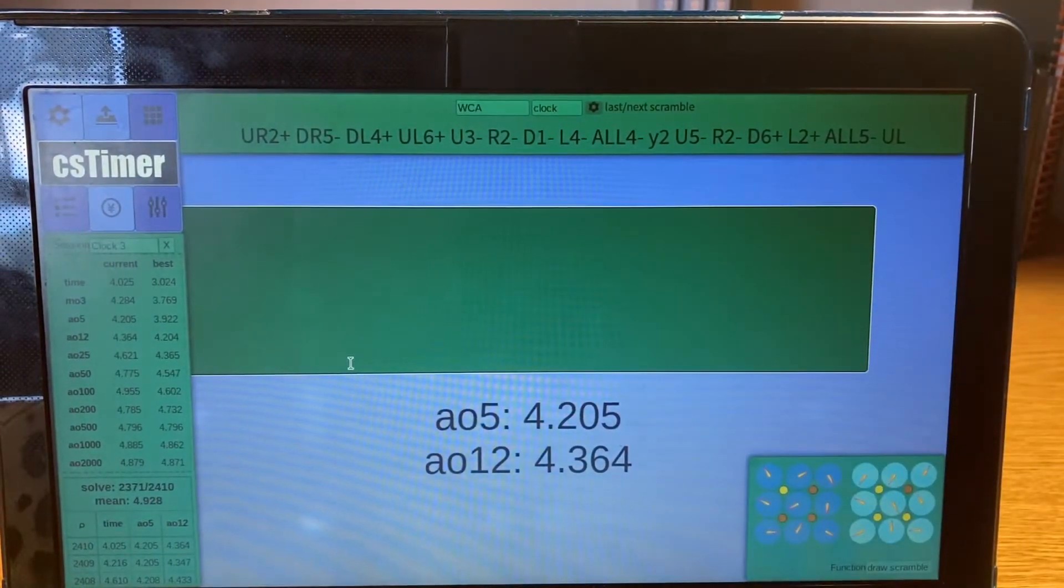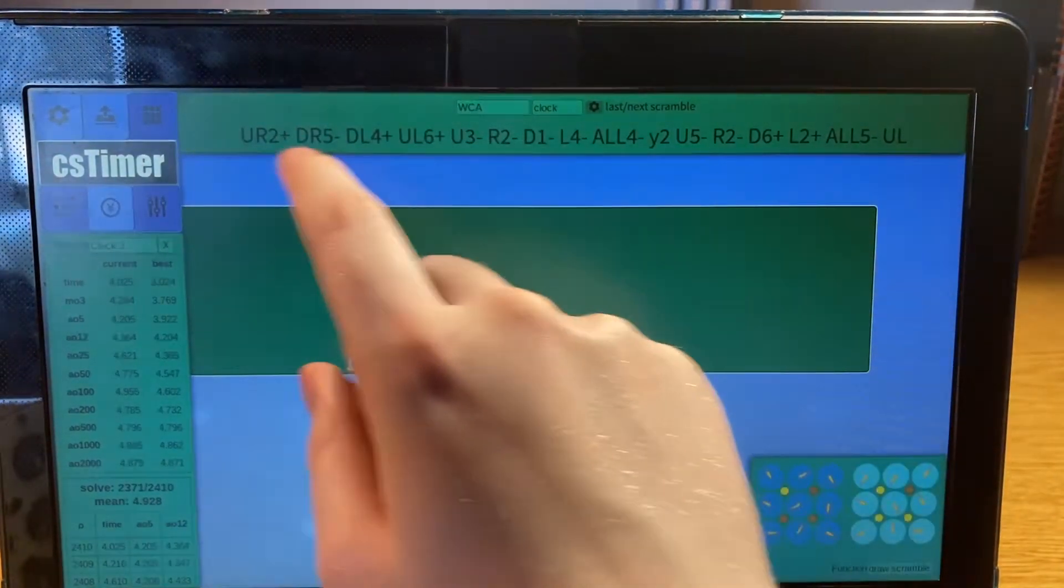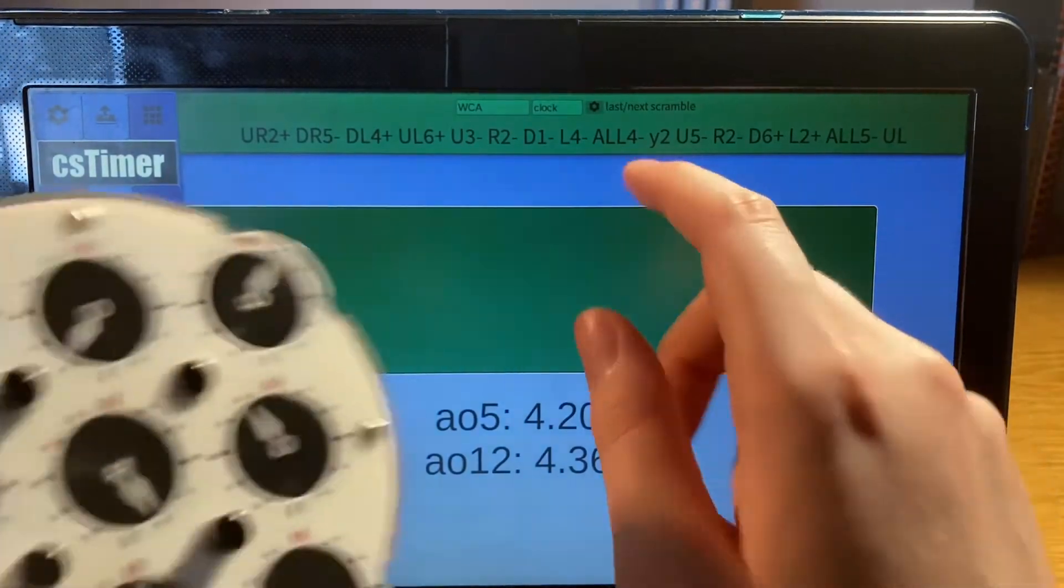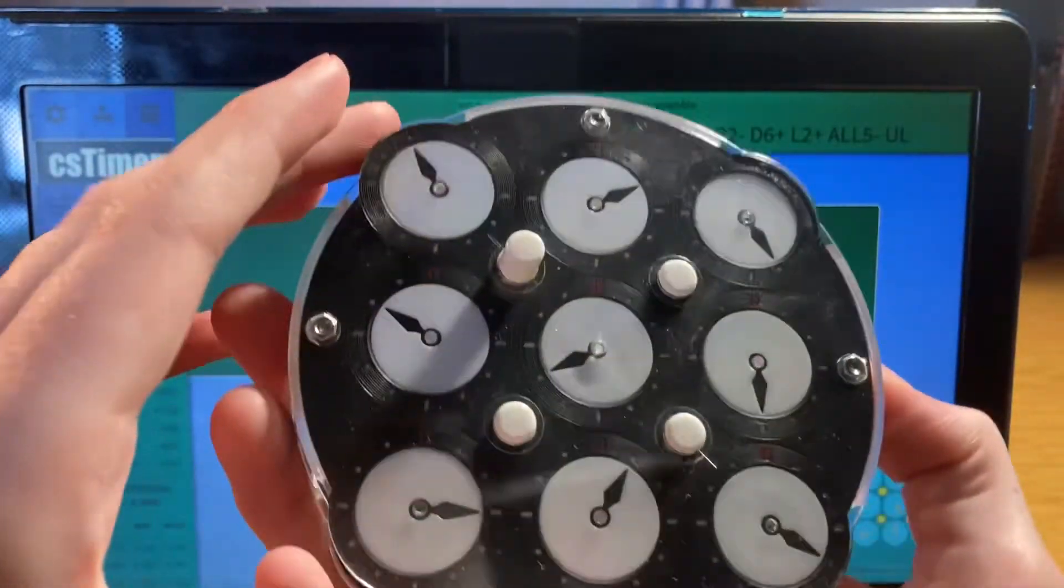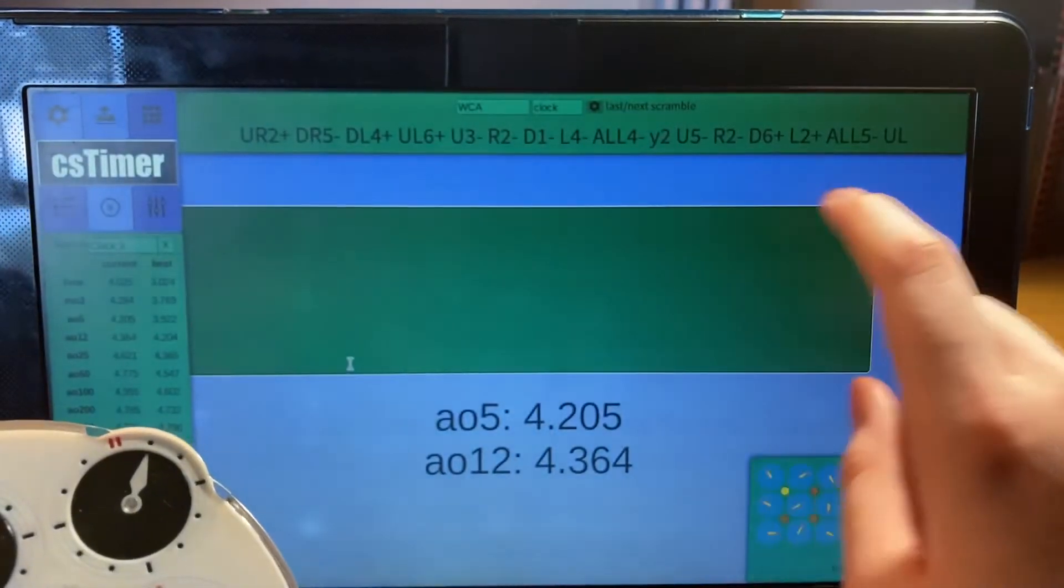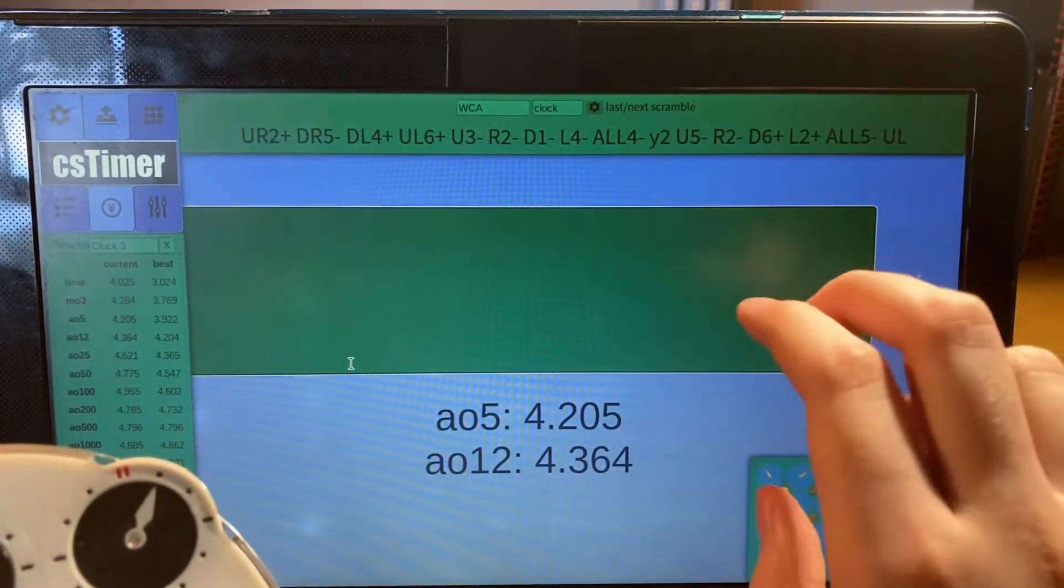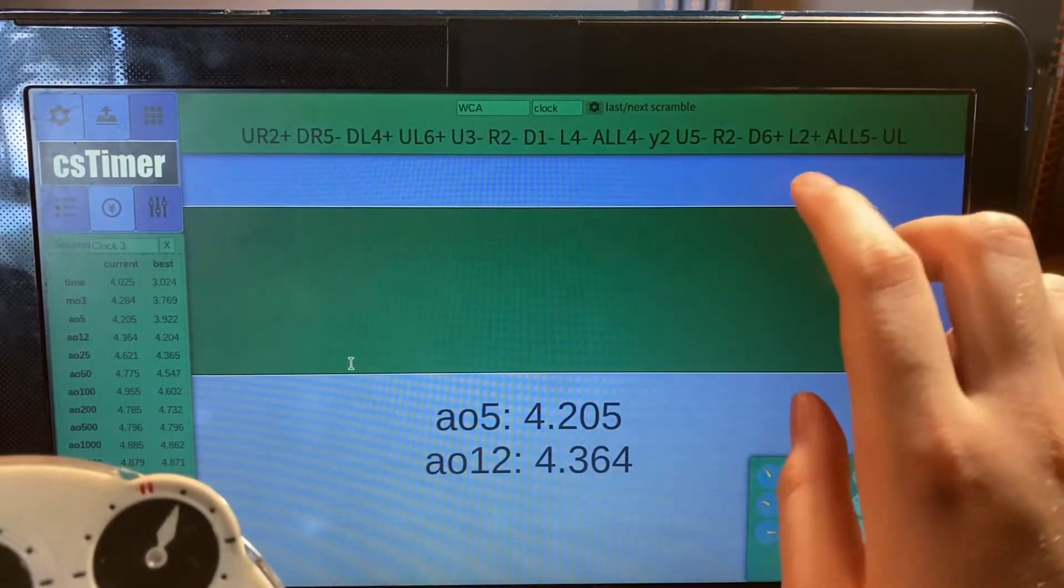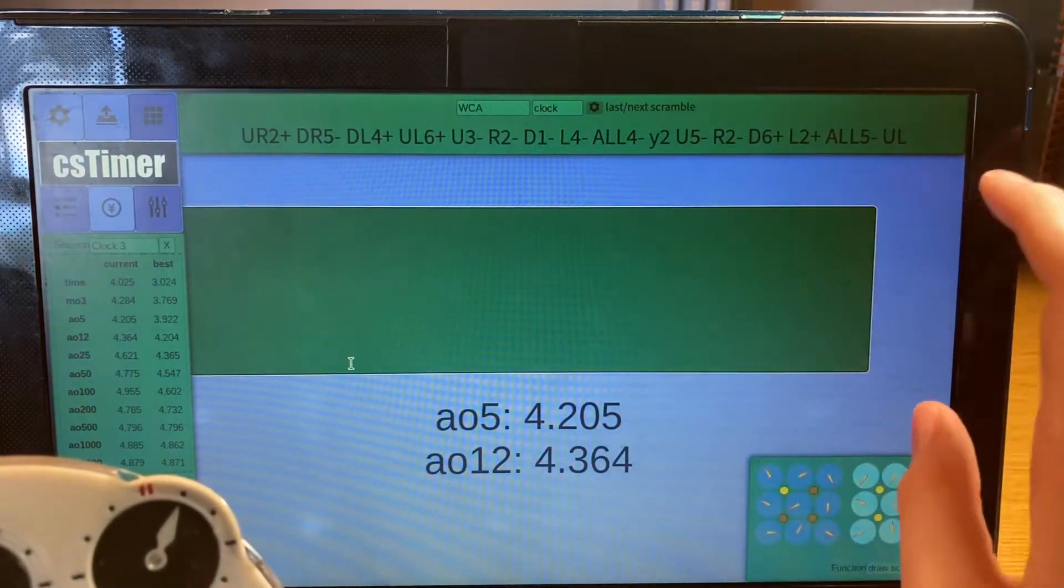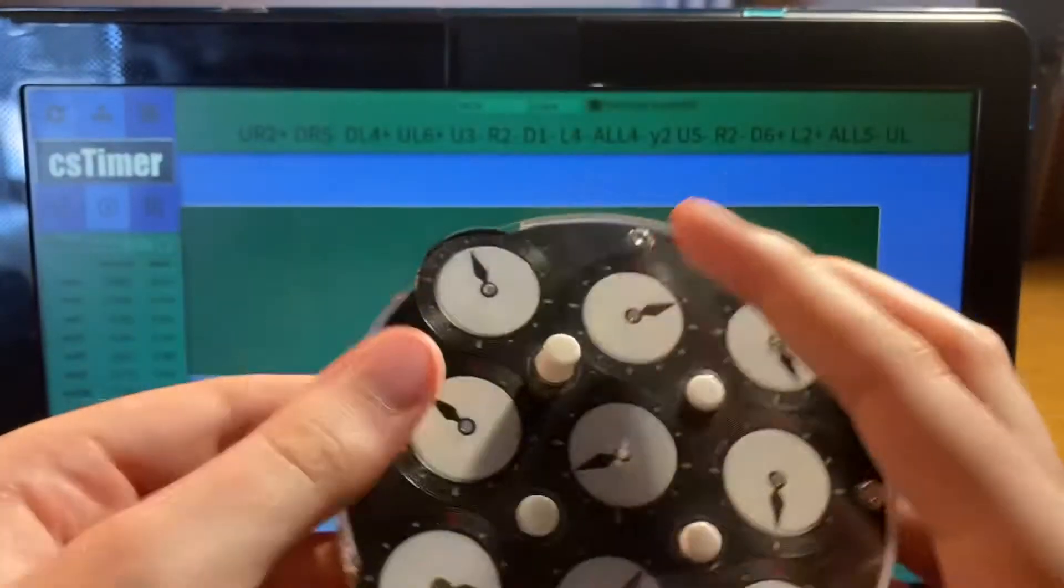After you scramble one side, there's a y2 which means you flip the clock over like this and do those moves on the opposite side. Afterwards, there's just a bunch of letters with no moves, which corresponds to which pins you put up after the scramble.